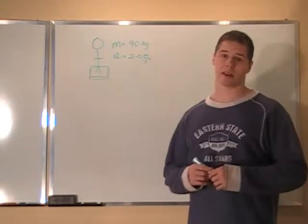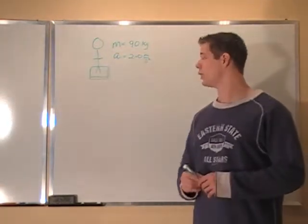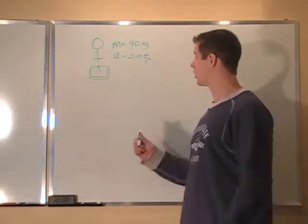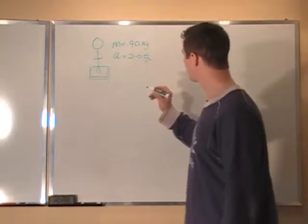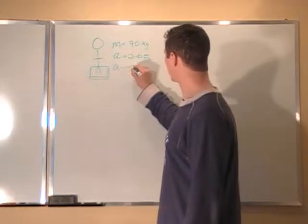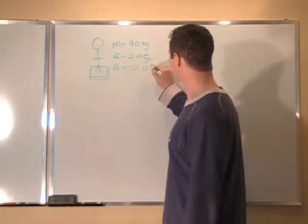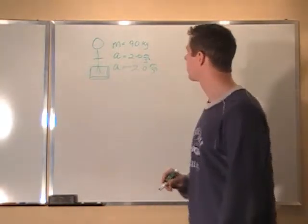So what we want to know is, if he's standing on a scale here, what is the reading on that scale for our two possible accelerations: A equals 2 meters per second squared and A equals negative 2 meters per second squared.